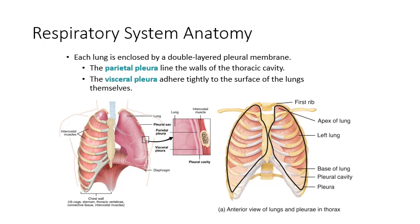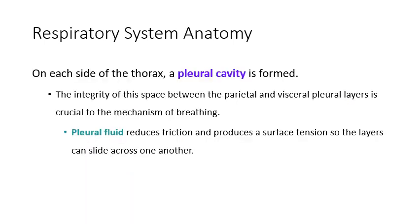The parietal pleura are more superficial — those are lining the walls of the thoracic cavity. So these pleural cavities are very important in how we bring air into the lungs and force air out. Because the lungs are constantly moving, constantly changing shape, expanding and contracting, we need these pleural cavities to reduce friction so that the two pleural membranes can slide past one another without increasing friction and adding more work to the process of breathing.